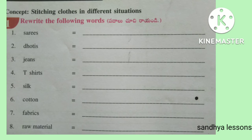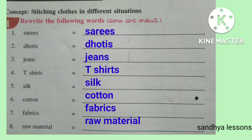Worksheet 1. First, rewrite the following words. The given words are: Saris, Dhotis, Jeans, T-Shirts, Silk, Cotton, Fabrics, Raw Material.